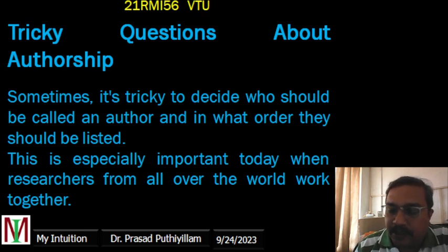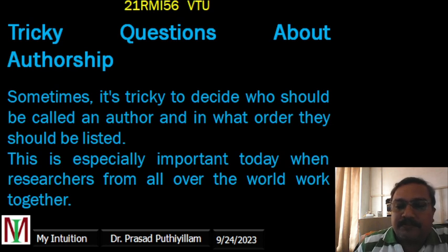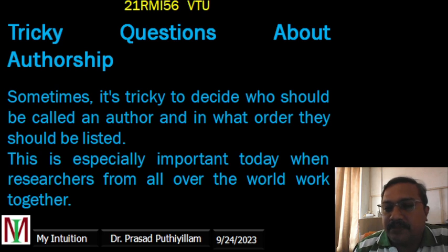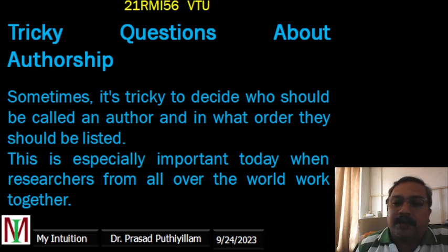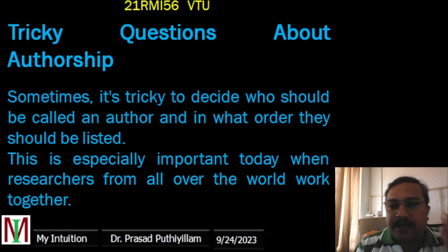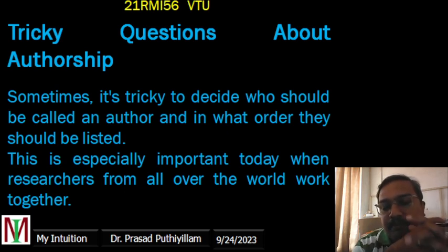In most academic institutes, there is always pressure from management to either publish or perish. Balancing academic duties with research makes it difficult to publish enough alone. So researchers may have to collaborate with people from other institutions, and then the same authorship issues arise again.